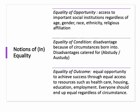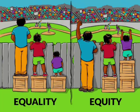We've got equality of condition, and this is where you will see quite often the disadvantages because of what you were born into — often to do with poverty. And then we've got equality of outcome. So if people all have equal opportunities, they should end up equal regardless of their circumstance. However, what we know is that that is not accurate or true.